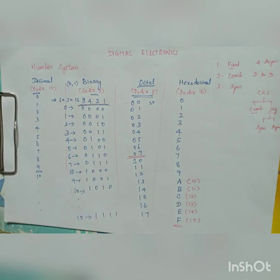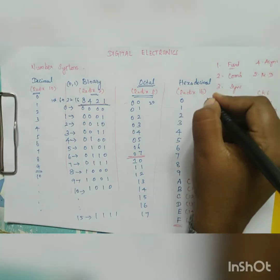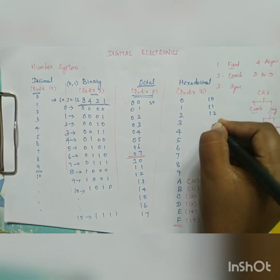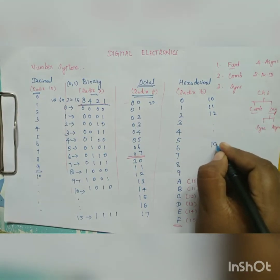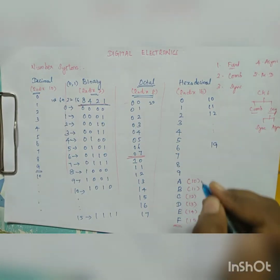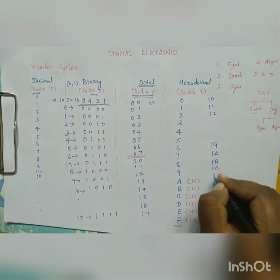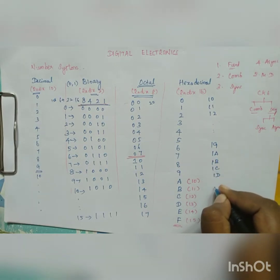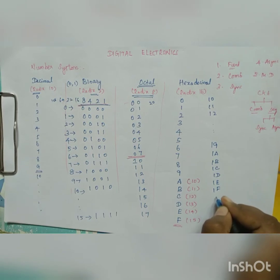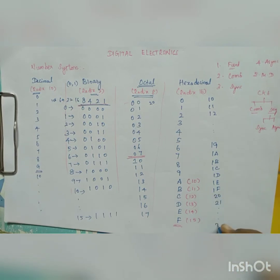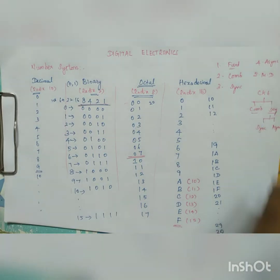After F, we continue: 10, 11, 12, and so on up to 19. After 19 comes 1A, 1B, 1C, 1D, 1E, 1F. After 1F, the number is 20, 21, and so on up to 29, then 2A, 2B, 2F, and so on.